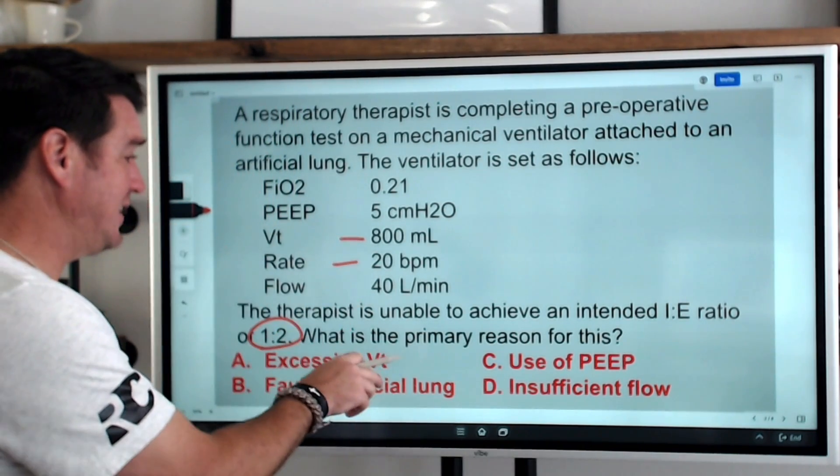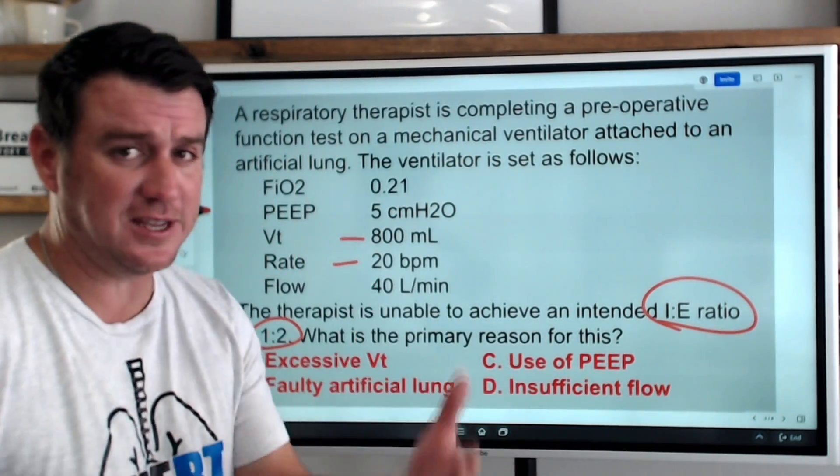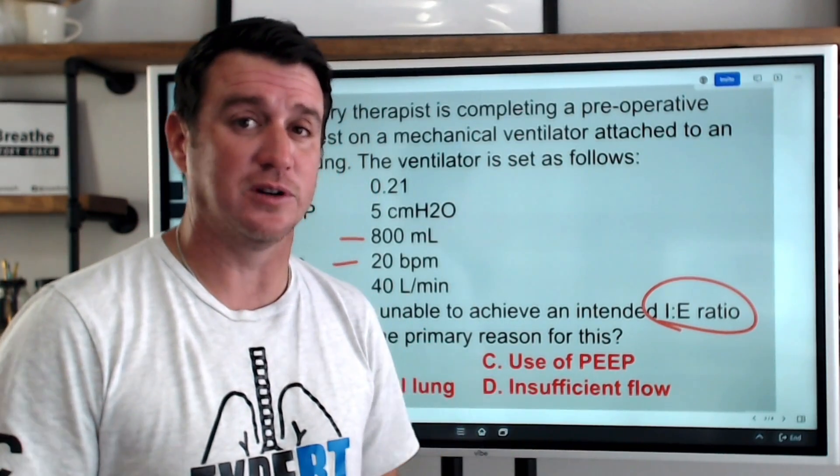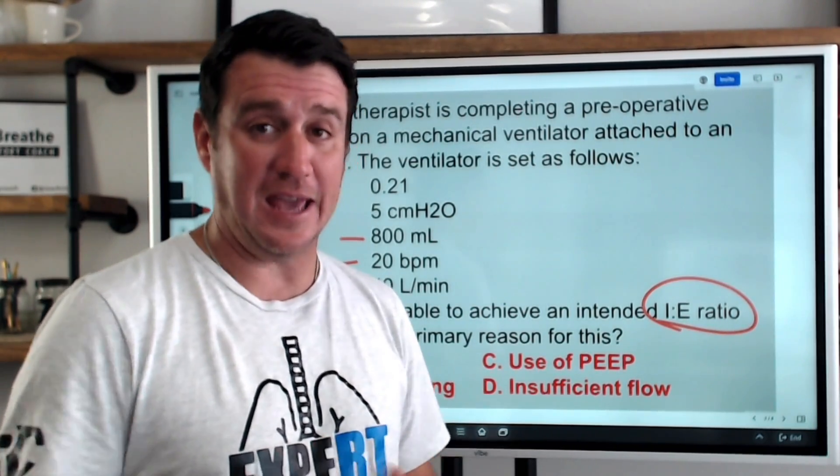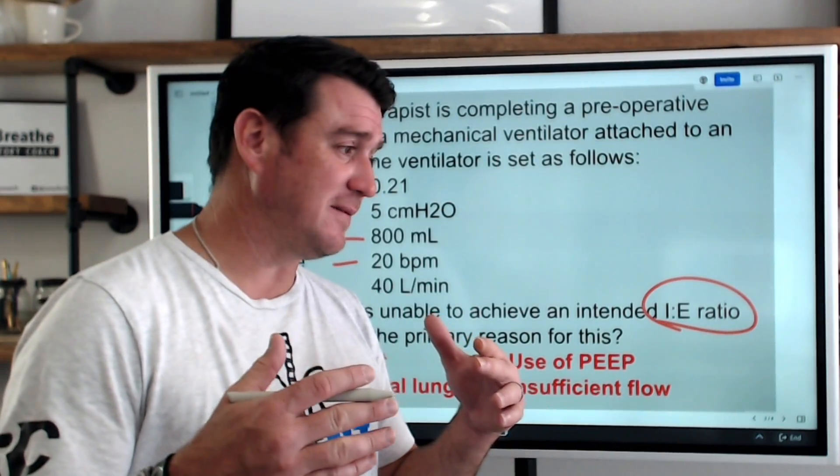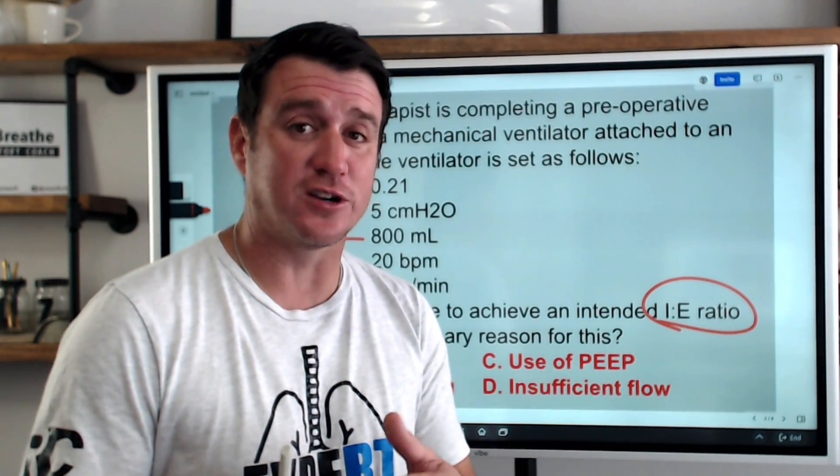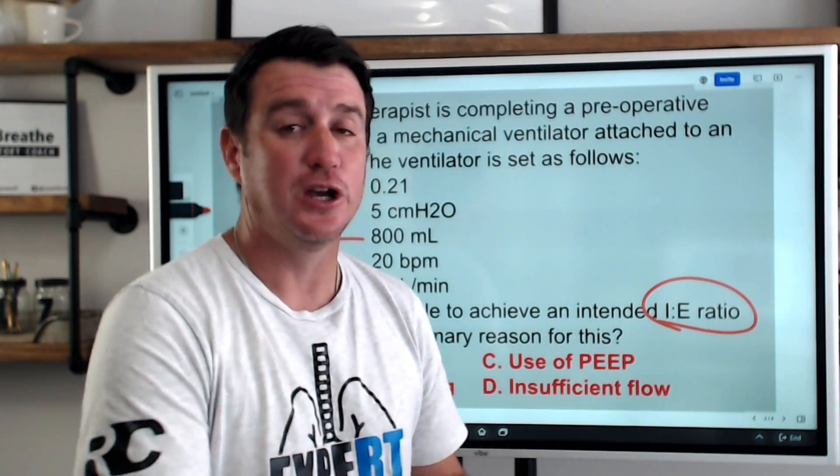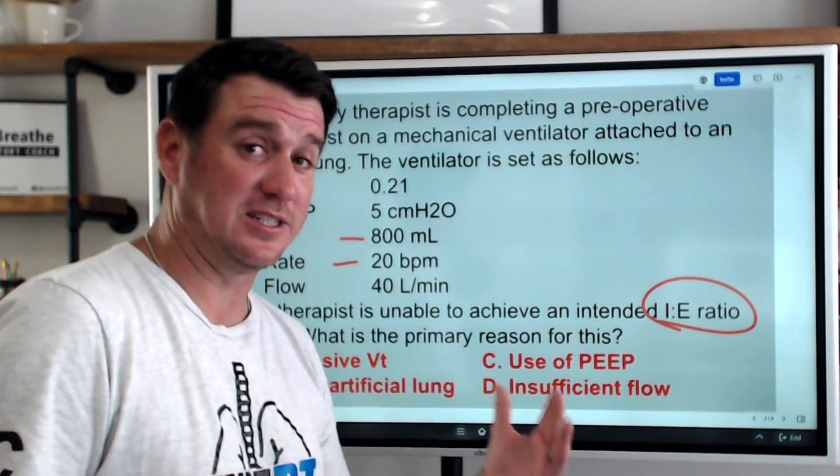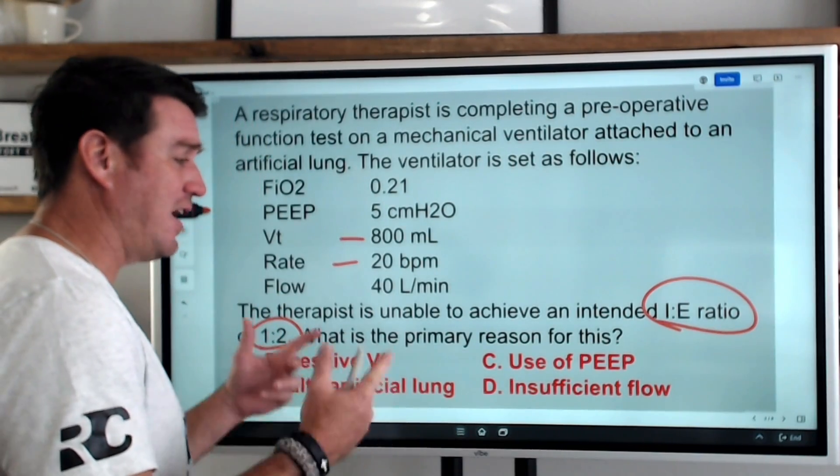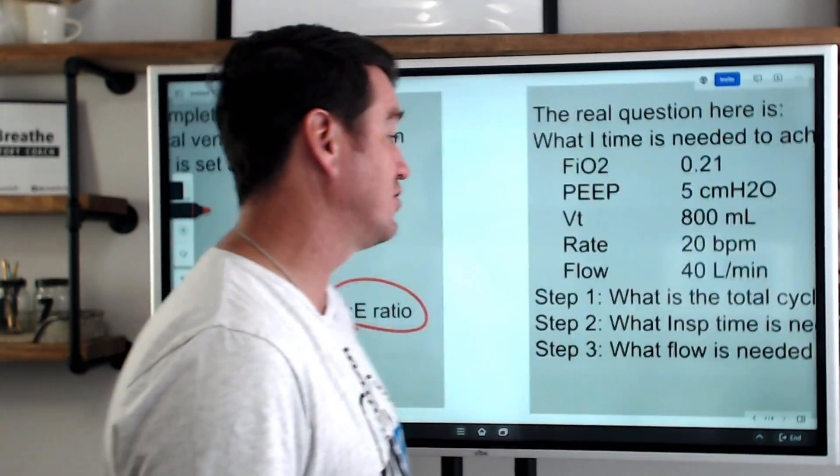Now, when we look at this, there's something that jumps out at me and that is the question is asking about I to E ratio. And I'm just going to tell you right now, I'm going to go out on a limb here, and I'm going to tell you that anytime you're looking or breaking down a question that is related to I to E ratio, if you have to completely guess, guess flow. Because again, 90% of the time, it all comes down to are we delivering the correct flow to establish the correct I time to establish the desired I to E ratio of one to two in this situation. So pretty certain I already know the answer to this question.